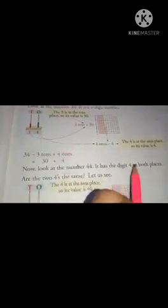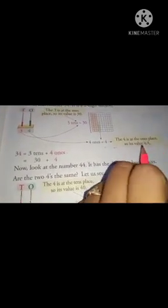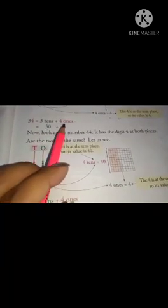So, 4 is once in place. So, it is only single digits. So, the 4 is at the ones place. So, its value is 4. So, now how can we write it? 34. 3 tens plus 4 ones. 3 tens means 30, 4 ones in place. So, no digits will come in place.